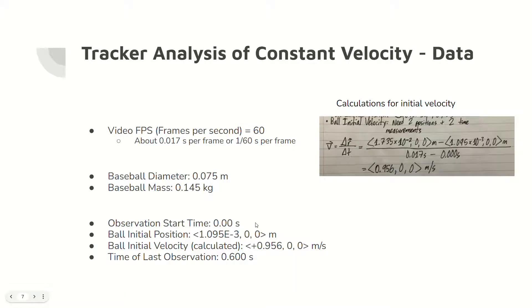Here are some data from the tracker analysis. Importantly, each frame is 1 sixtieth of a second, the change in time is 0.6 seconds, and the velocity of the object is roughly 0.956 meters per second in the positive x direction.